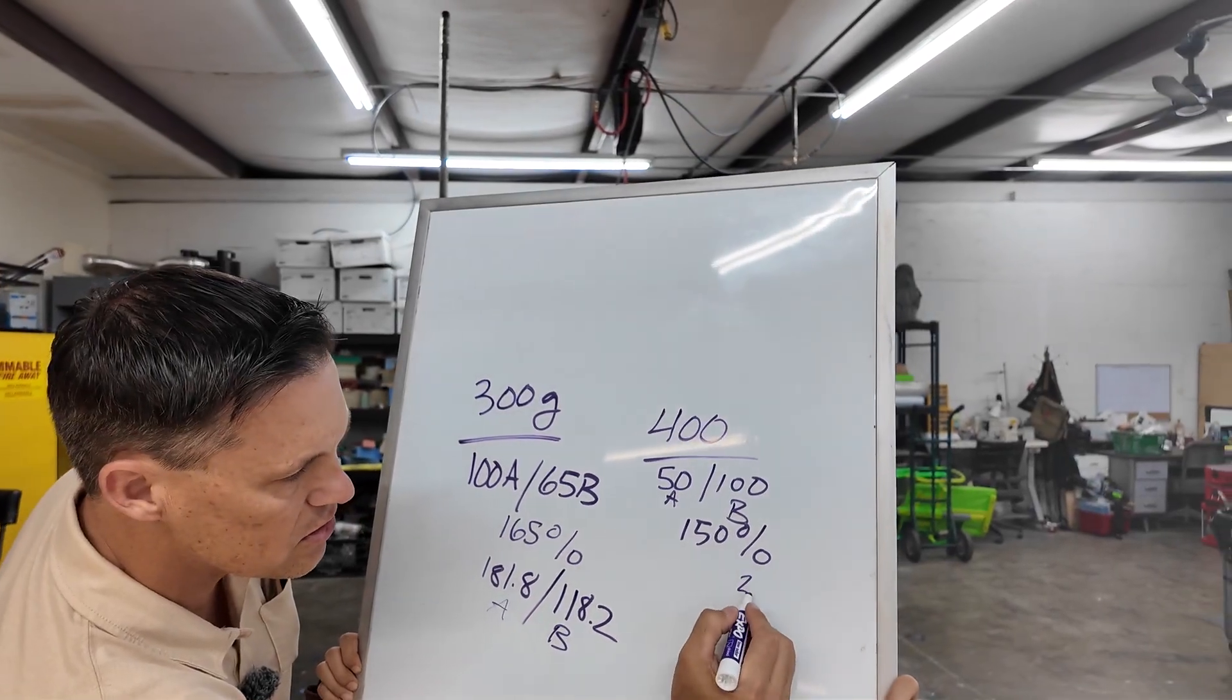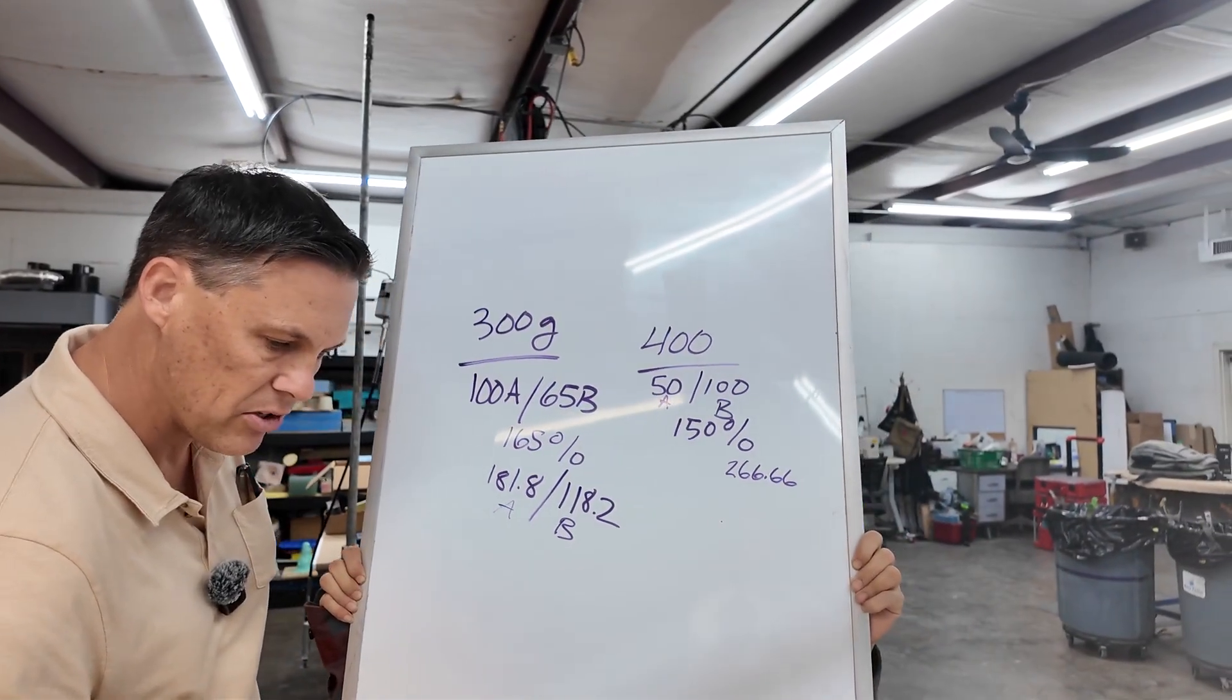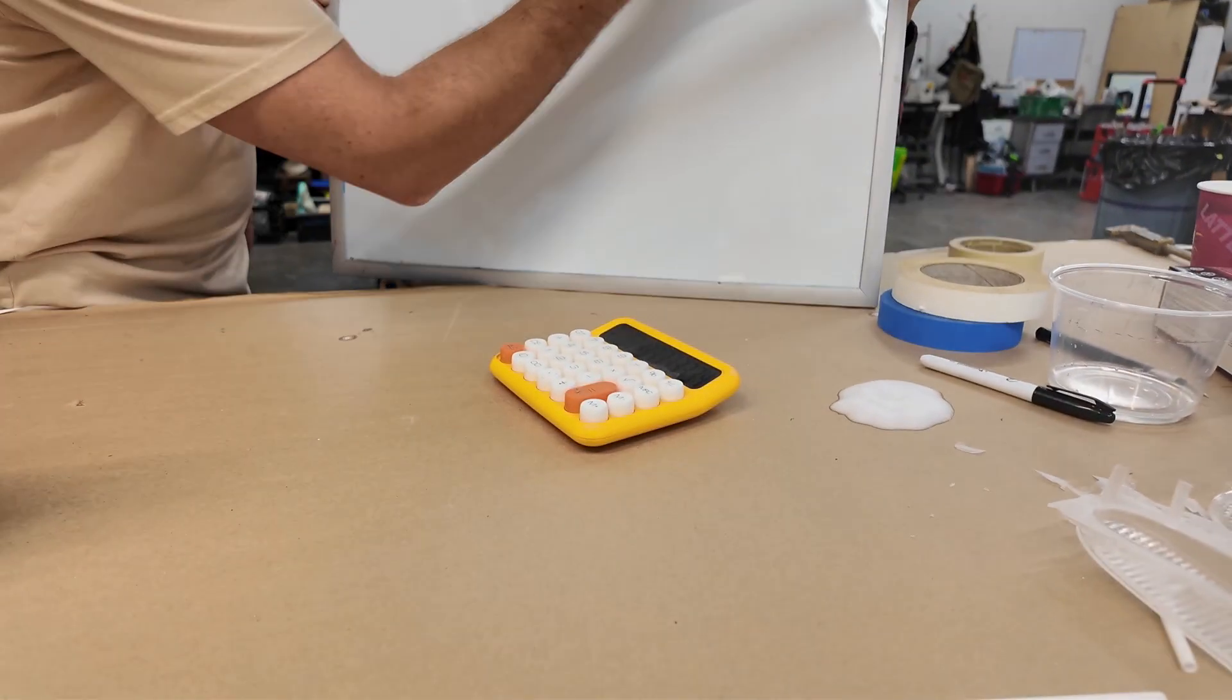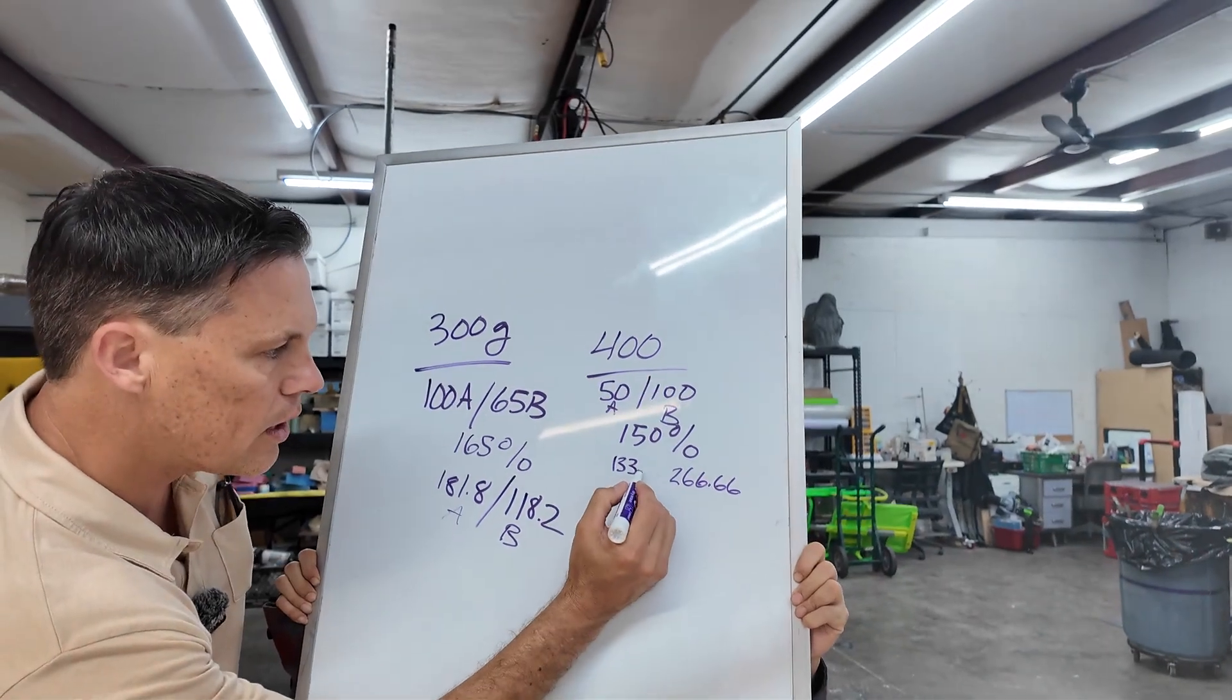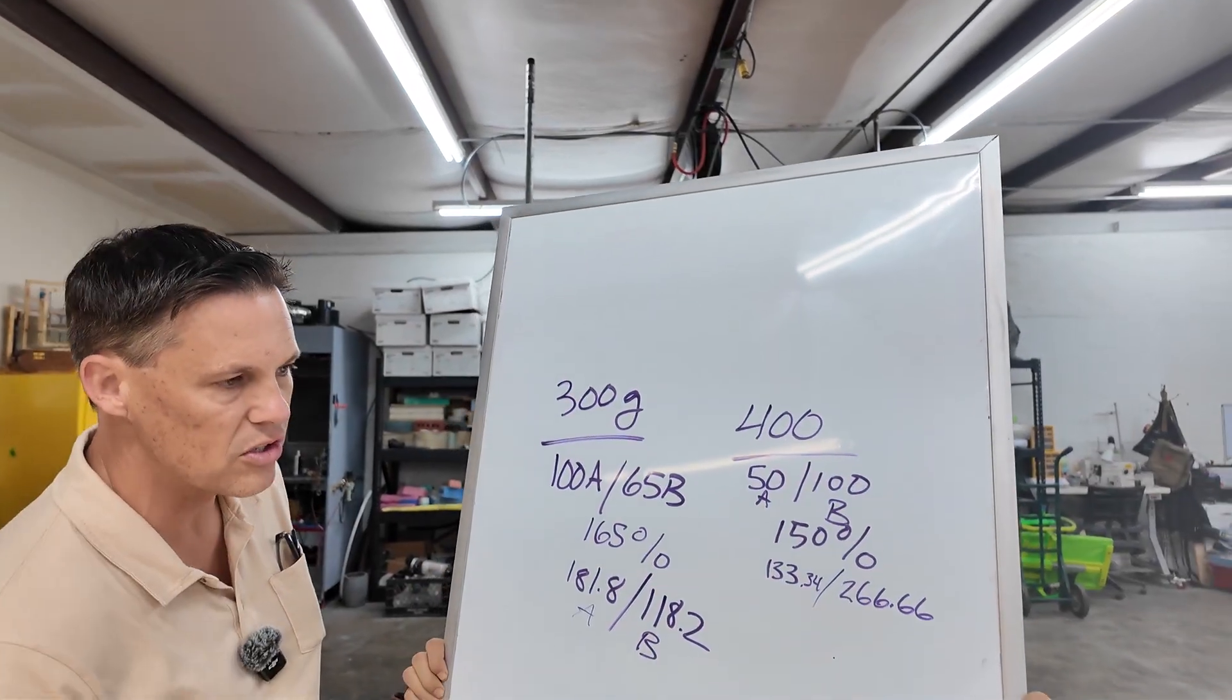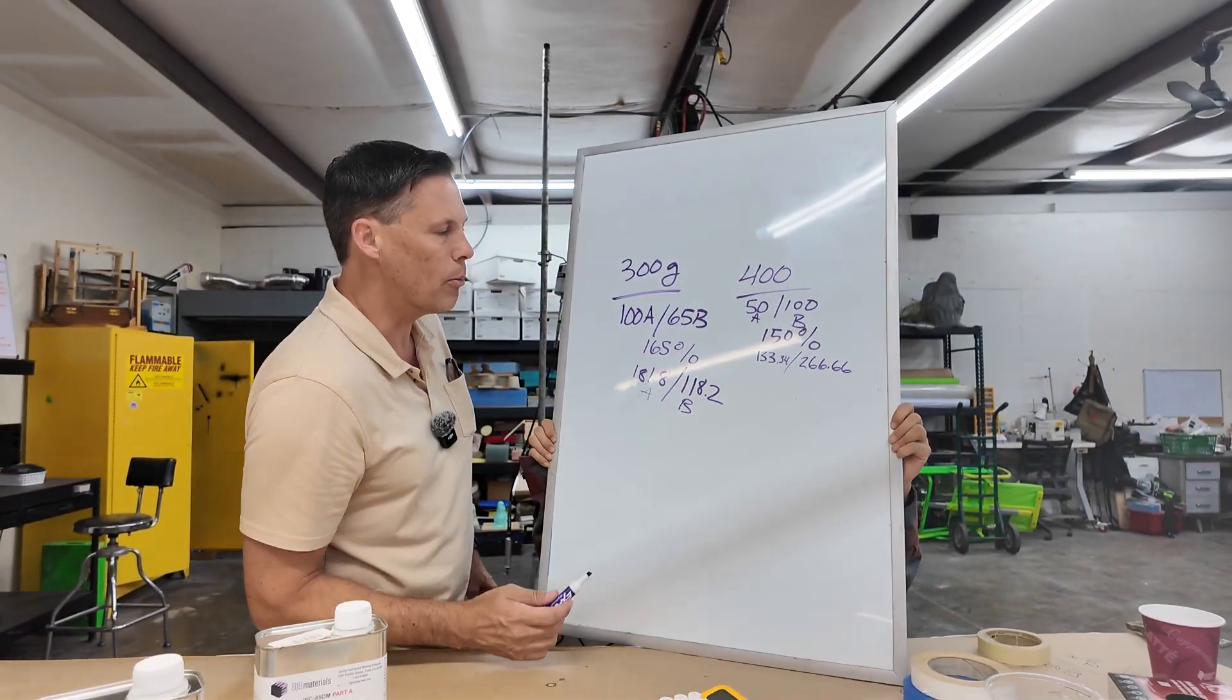And basically, the rest for the other side is the B. So the difference is 133. And that's point, well, I'm going to round up. So 133.34. So that makes it nice and even. And you can even round this off and say 133 and 266. That particular product's forgiving enough to do that. But if you want to really get to the decimal points, there you are.